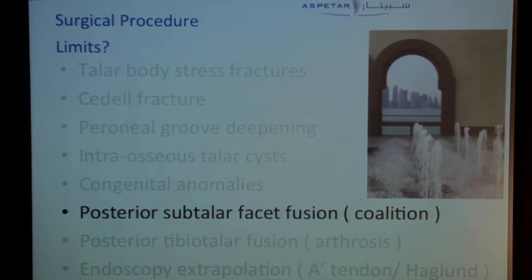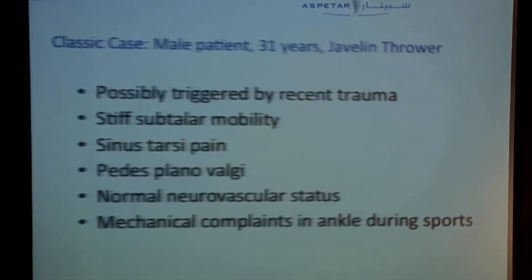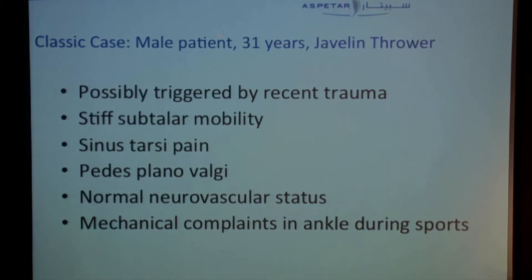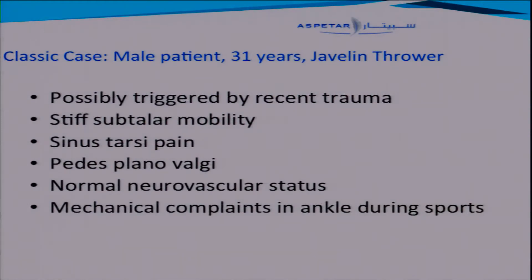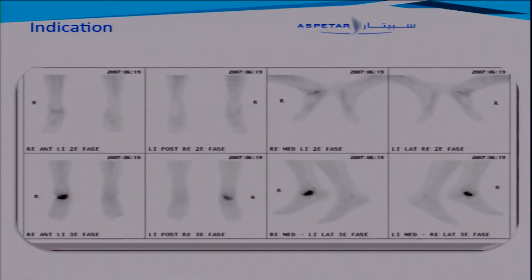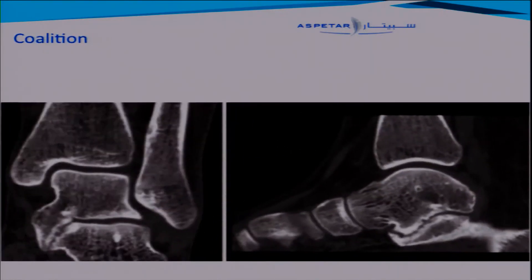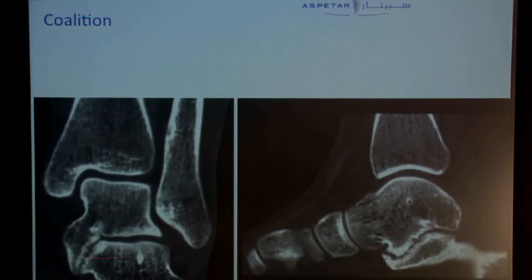What about the real subtalar fusion? We had a 31-year-old javelin thrower with stiff subtalar mobility, sinus tarsi pain, planovalgus feet, and mechanical complaints in the ankle during sports. He came for a second opinion. He had a huge metabolic signal on his scintigraphy, and we saw on CT scan that he had a big medial coalition.